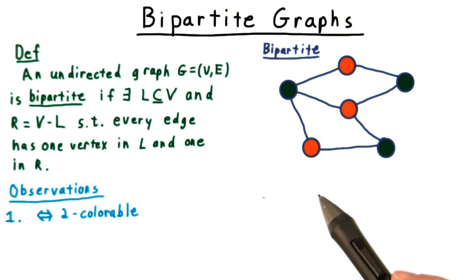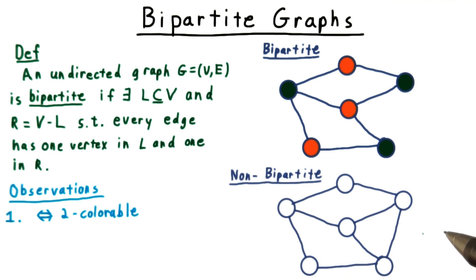A few observations are in order. First, saying that a graph is bipartite is equivalent to saying that it's 2-colorable, for those of you who are familiar with colorings.